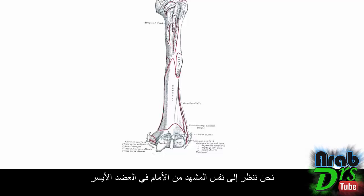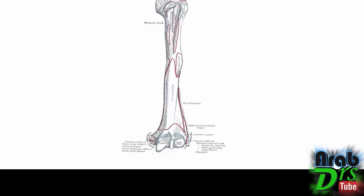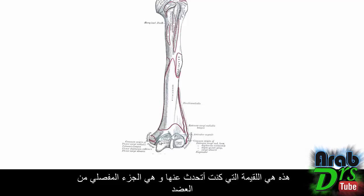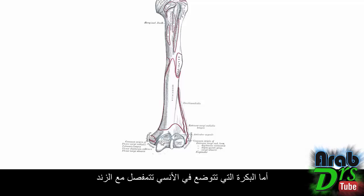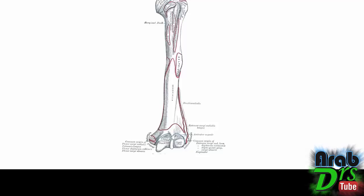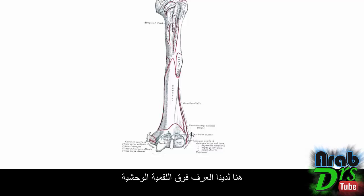Switching to a diagram, looking anteriorly at the left humerus: you've got the head up here medially, the medial epicondyle and lateral epicondyle distally, and the condyle — the articular part of the humerus. The capitulum lies laterally and articulates with the radial head. The trochlea sits medially and articulates with the ulna. Just superior to the epicondyles, you've got the medial and lateral supracondylar ridges.